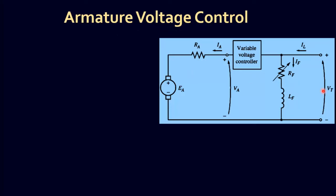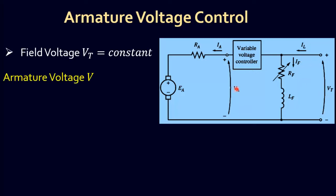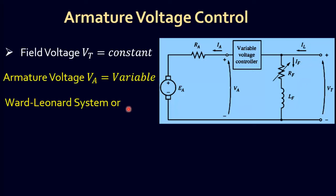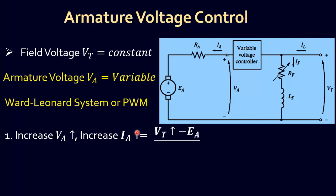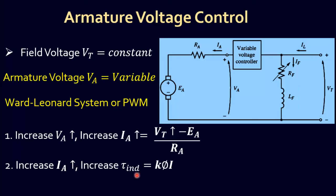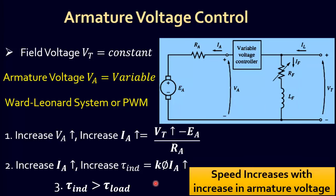As you can see in the diagram, the field voltage VT remains constant and only armature voltage VA is variable according to desired speed. The variable voltage can be achieved using the Ward-Leonard system or pulse width modulation (PWM). By increasing armature voltage VA, armature current IA is increased according to this relation. As the induced torque is greater than load torque, the motor speed is also increased.